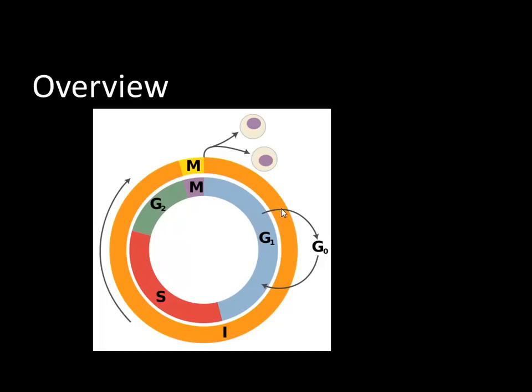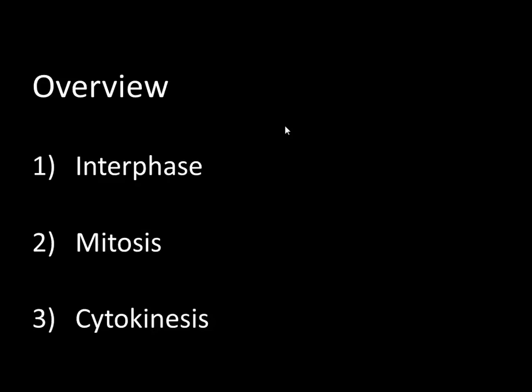There is interphase at the bottom. I'm not going to talk much about G1, S, and G2 here. There is mitosis, a very short part. We're going to talk a lot about the steps of mitosis, but the overall duration of mitosis is very short. And then they're not showing it here, but cytokinesis is a third step. Some people consider cytokinesis a part of mitosis, but I do not. So three steps.